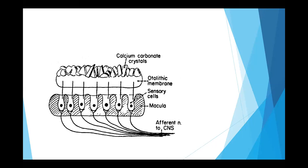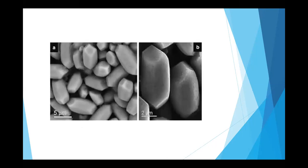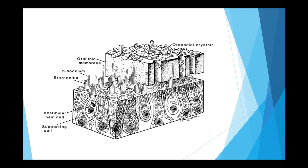The otolith organs are for linear motion. The calcium carbonate crystals relate to gravity, that's why we have them. This electron microscope picture shows the calcium carbonate crystals on the otolith membrane — called otoconia. The hair cells project into the otolith membrane, and the otoconial crystals sit on top of it. The hair cells of the semicircular canal and the otolith organs are the same — they have Type 1 and Type 2 fibers and have the kinocilium as the tallest stereocilia.